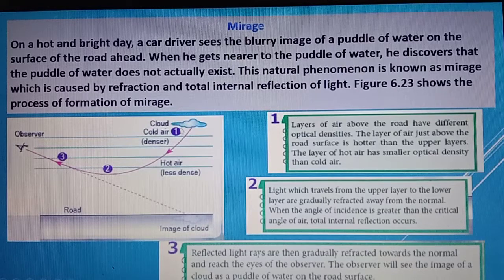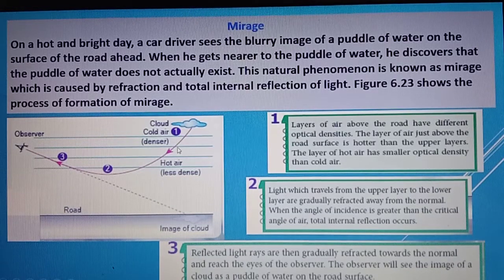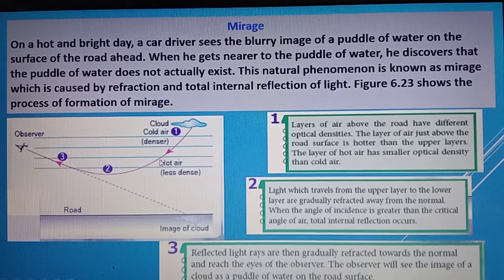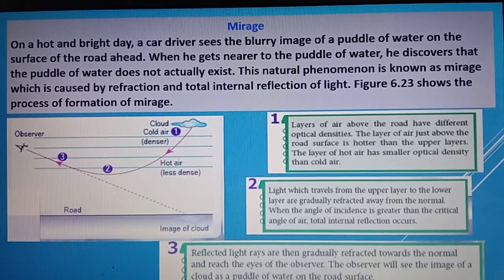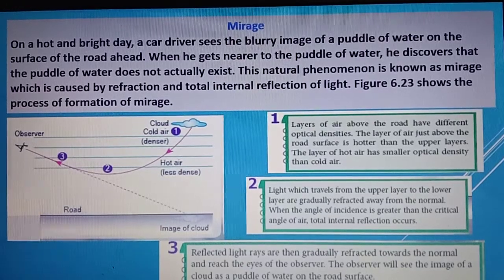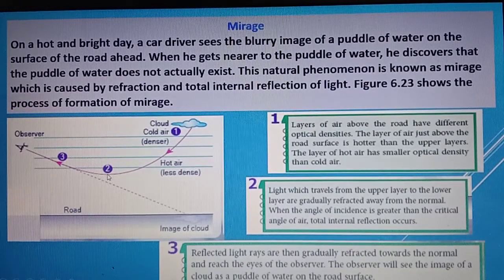You can see light from a cloud traveling from denser to less dense air. Drawing a normal line, the light ray refracts away from the normal. At each boundary it refracts away from the normal again. As it continues refracting away, the angle of incidence becomes greater than the critical angle, and the light ray experiences total internal reflection.